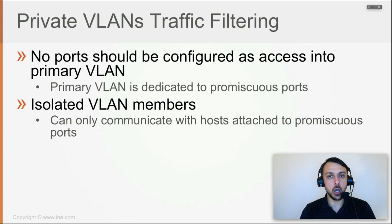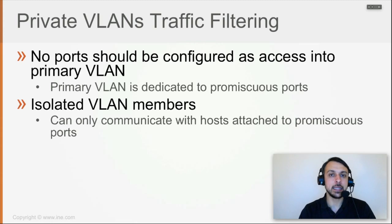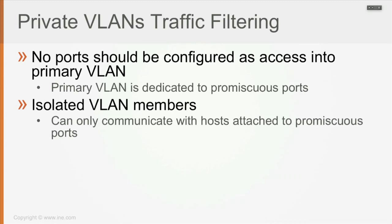I want those hosts to be able to send traffic out of the VLAN, so they have to be able to communicate with somebody within the VLAN — and that's going to be the promiscuous port. On the promiscuous ports, I'm going to have connected the default gateway of the VLAN or any other devices which have to be reachable from any of the secondary VLANs.